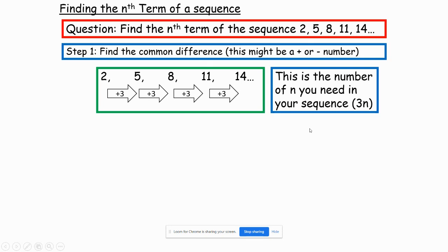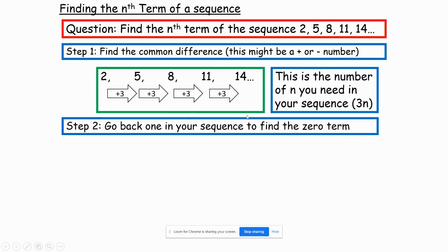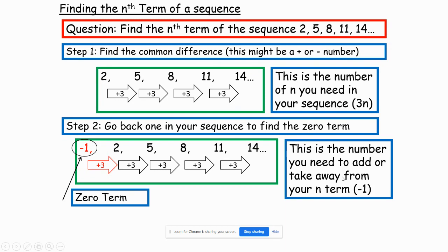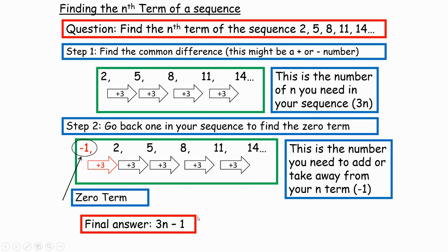But we're not done yet, because three times 1 is not 2, three times 2 is not 5, three times 3 is not 9 — it's not quite that. We need to go back one term in our sequence to find the zero term. This is the first, second, third, fourth, fifth term. If we go back one, it's the zero term. Going backwards in the sequence means taking away 3, so the zero term is minus 1. That goes on the end of our formula, giving us 3n minus 1 as our final answer.